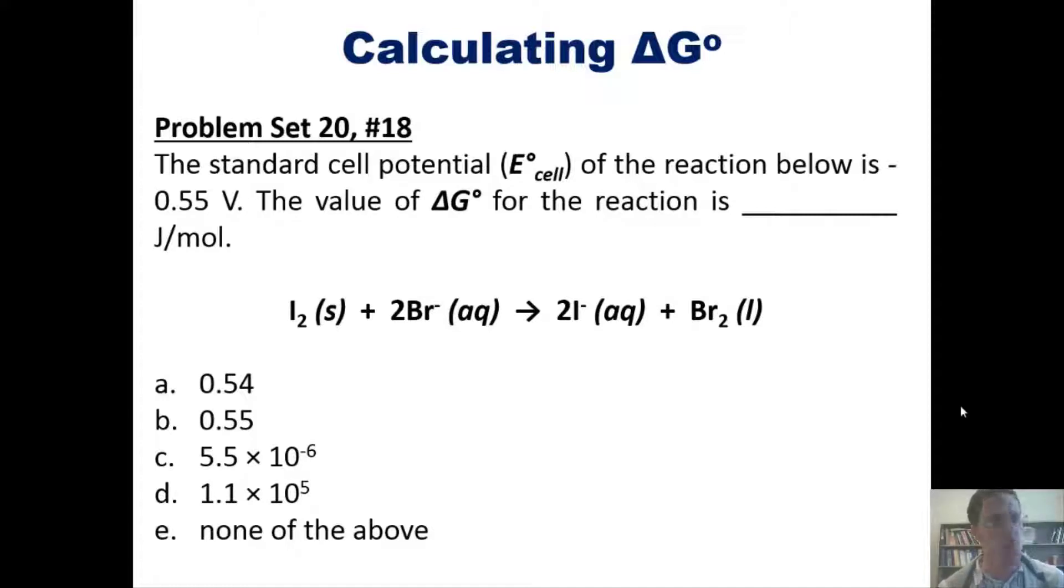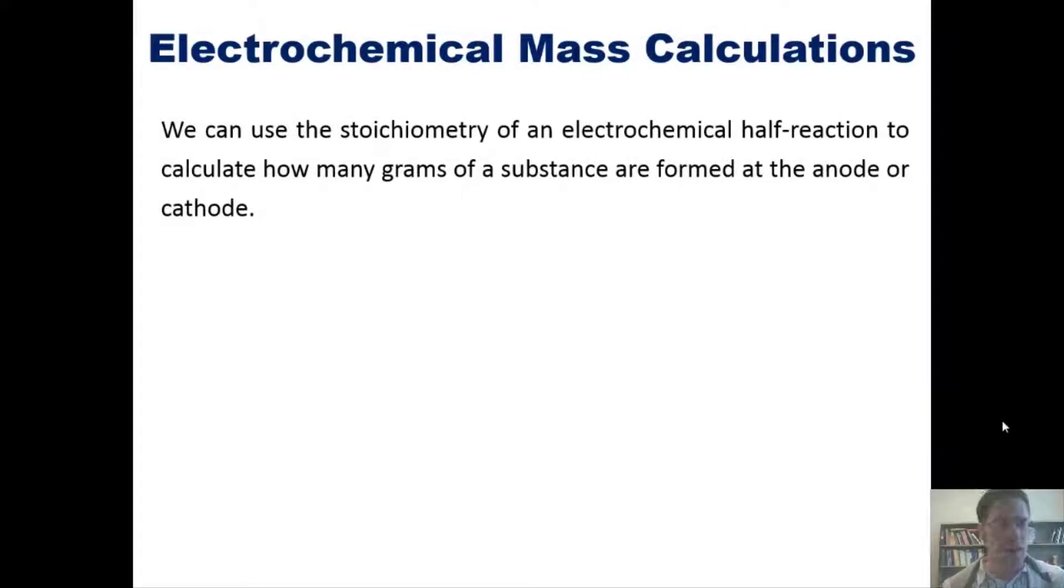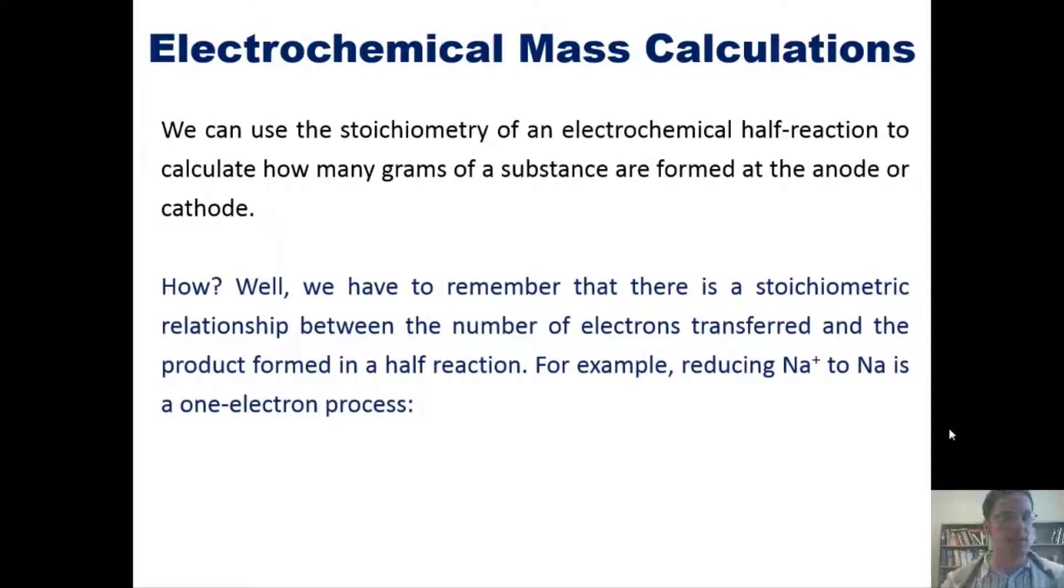We can use the stoichiometry of an electrochemical half reaction to calculate how many grams of a substance are formed at either the anode or the cathode. How you may ask? Well, we have to remember that there is a stoichiometric relationship between the number of electrons transferred and the product formed in any half reaction.